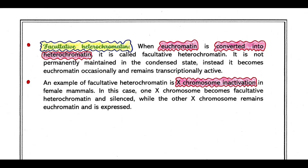The example of facultative heterochromatin is X chromosome inactivation in female mammals. In this case, one X chromosome becomes facultative heterochromatin and is silenced, while the other X chromosome remains euchromatin and is expressed.